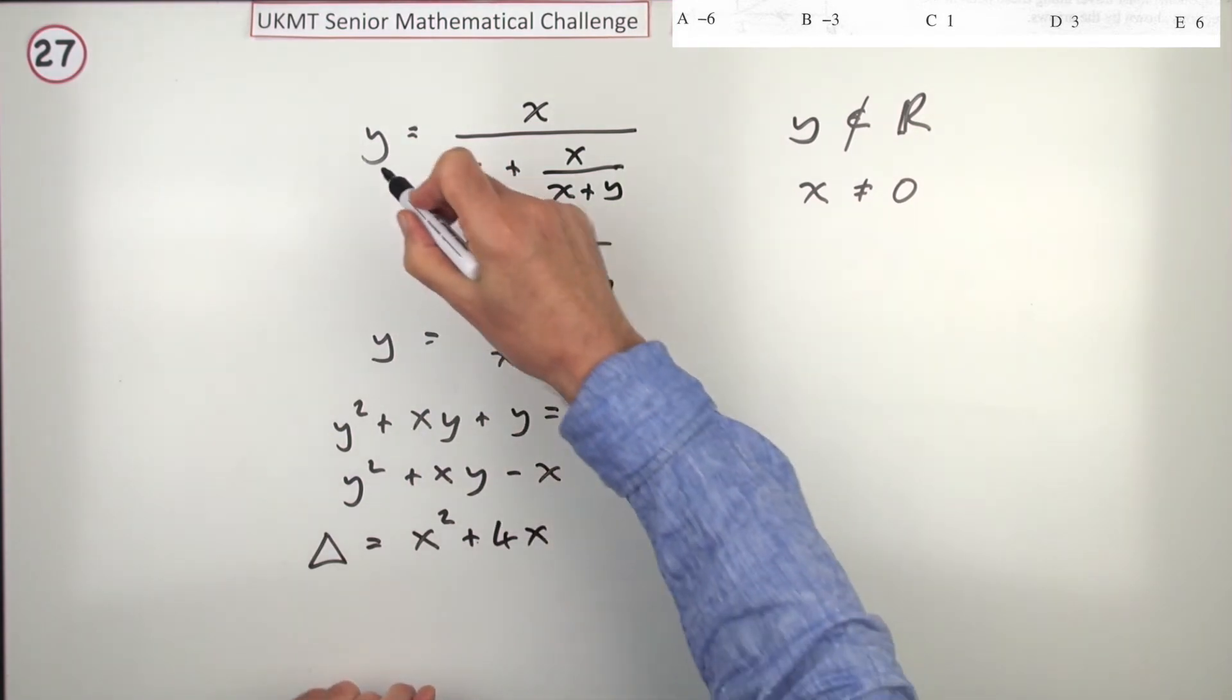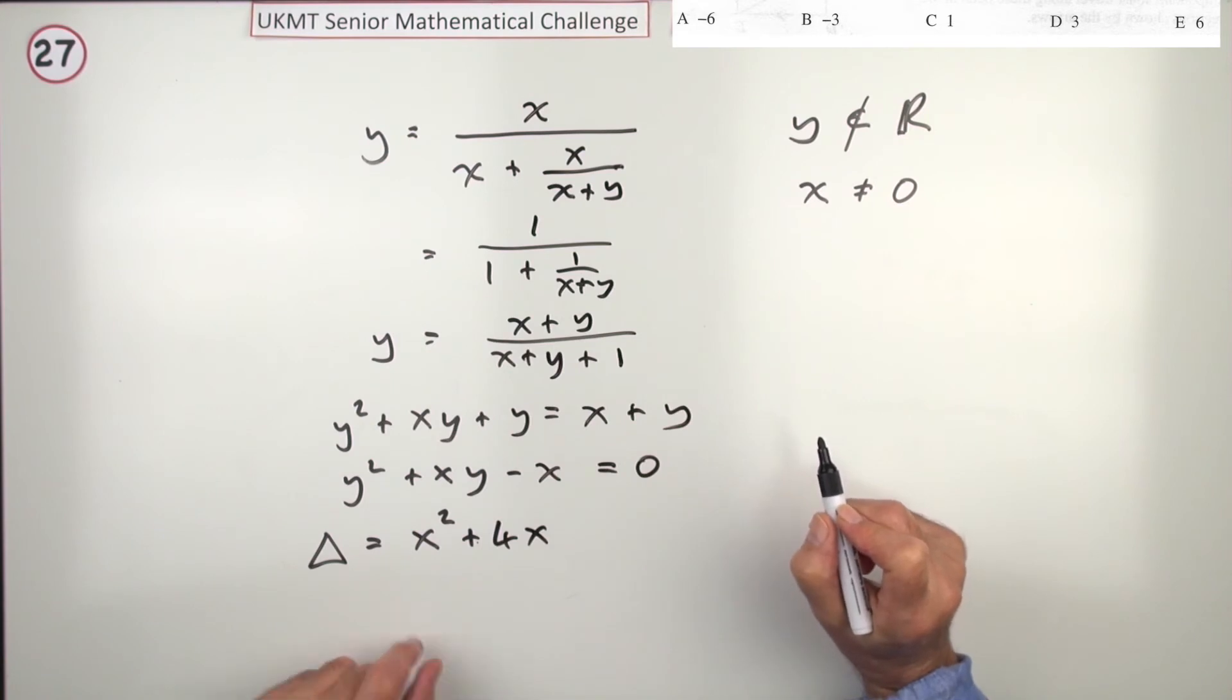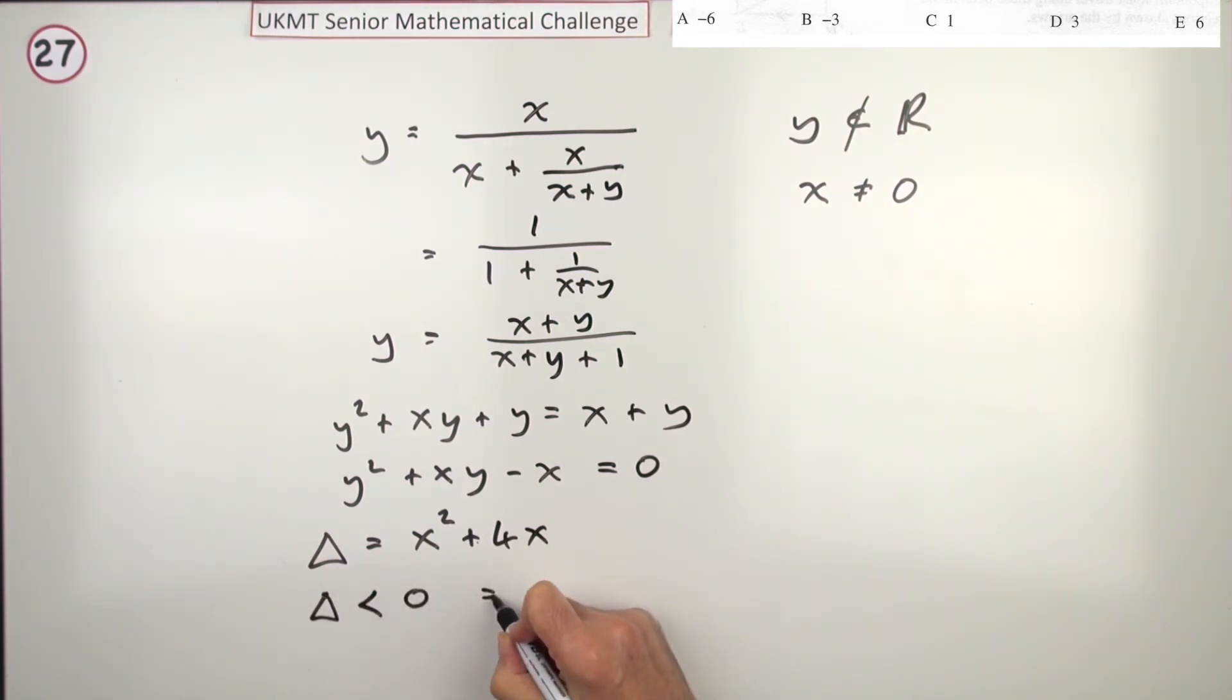So, what are the values of x, for which y will have no real values? Well, that'll be when the discriminant is less than 0. That means that you want the discriminant to be less than 0, which means that x, I'll just factorise that out, times x plus 4 has to be less than 0.